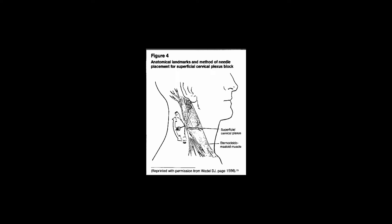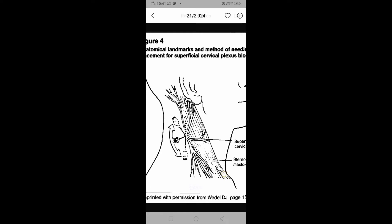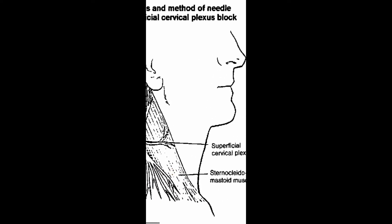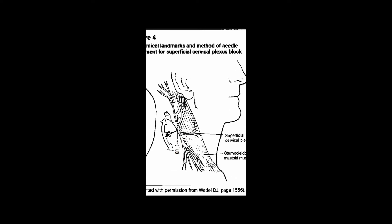This image shows the cervical plexus anatomical landmark required for cervical plexus block. This is the sternocleidomastoid muscle — sternal head and clavicular head. Along the posterior border of the sternocleidomastoid, nearly at the midpoint, the superficial cervical plexus emerges, which supplies the skin and subcutaneous tissue of the anterior lateral surface of the neck and supra-clavicular area.